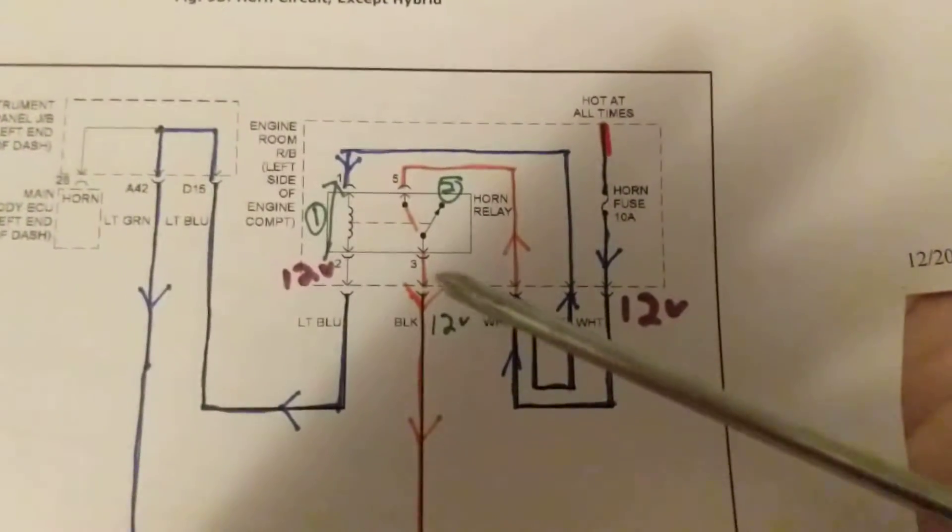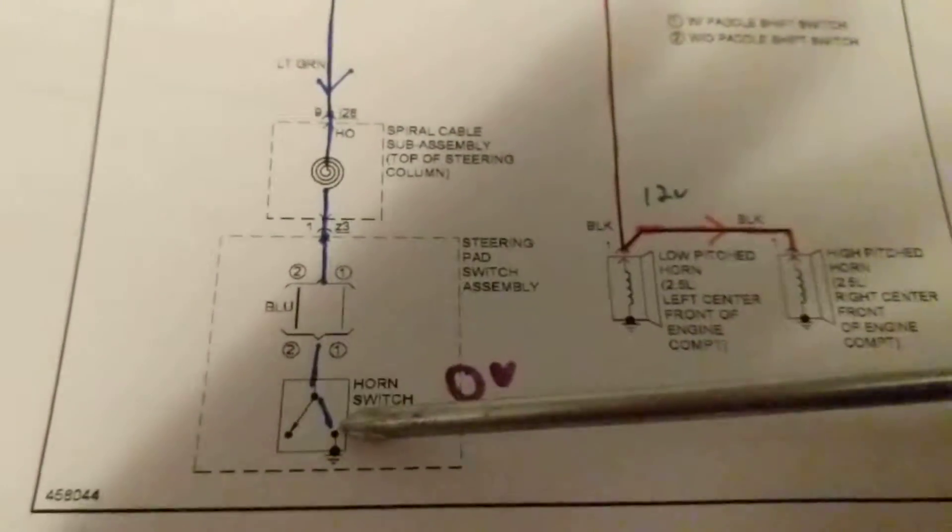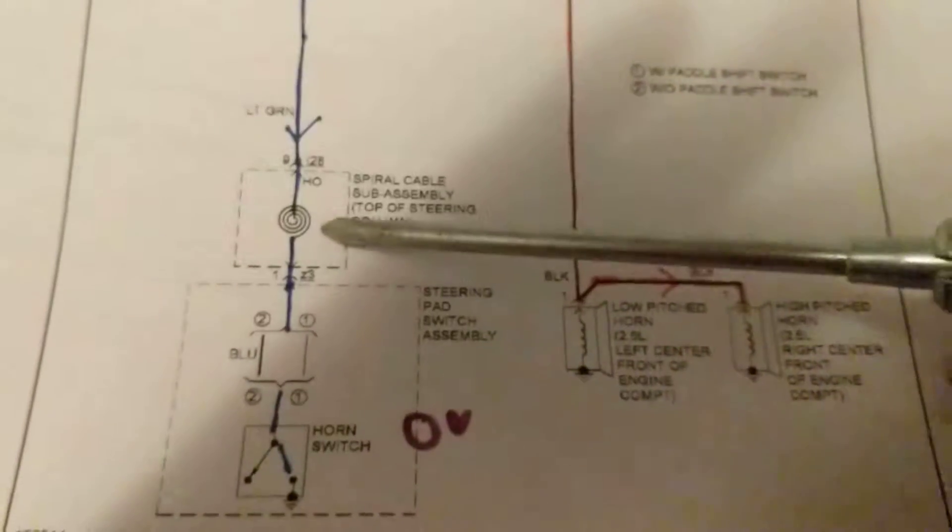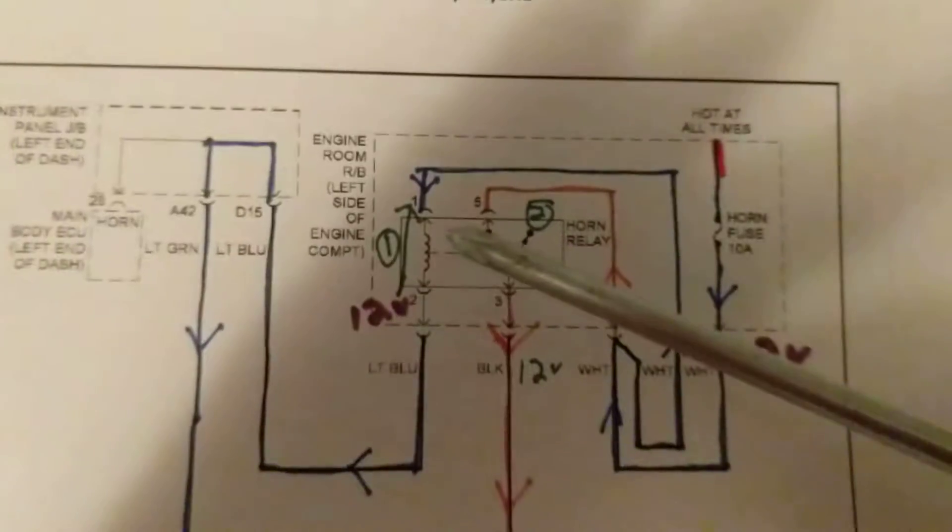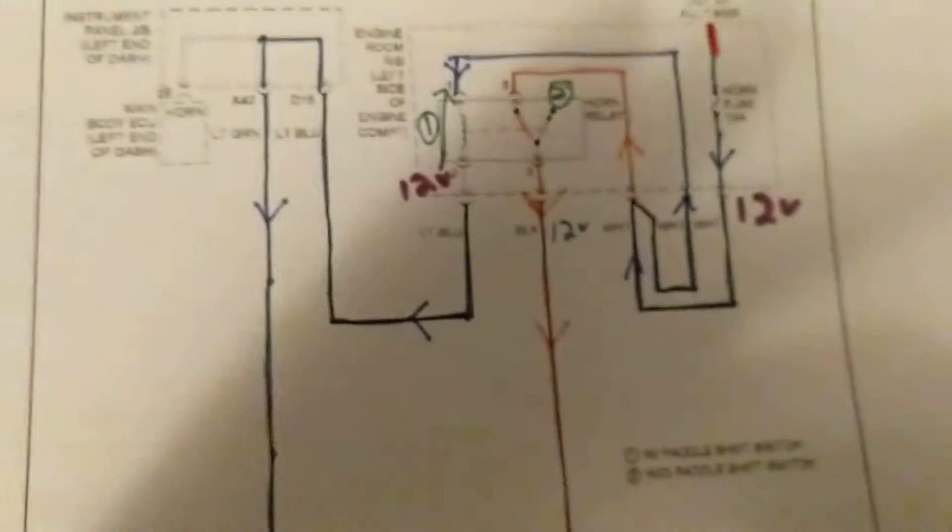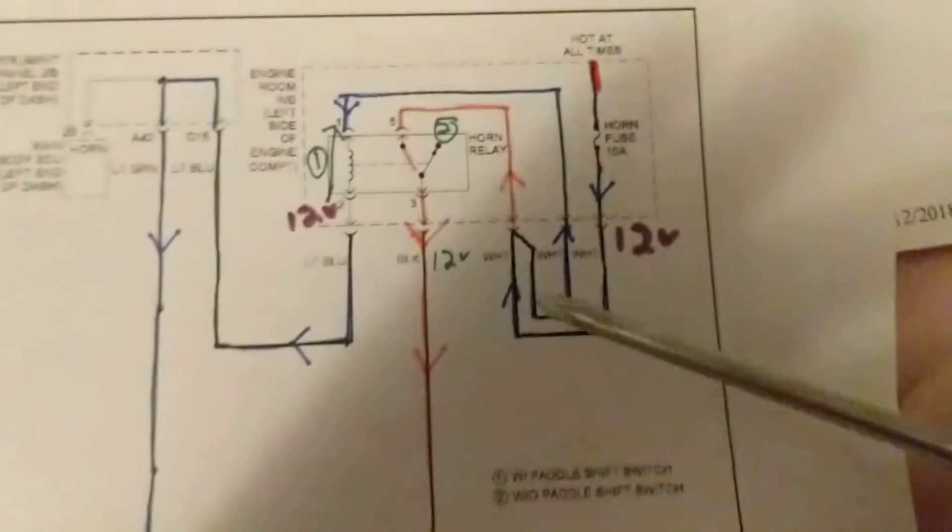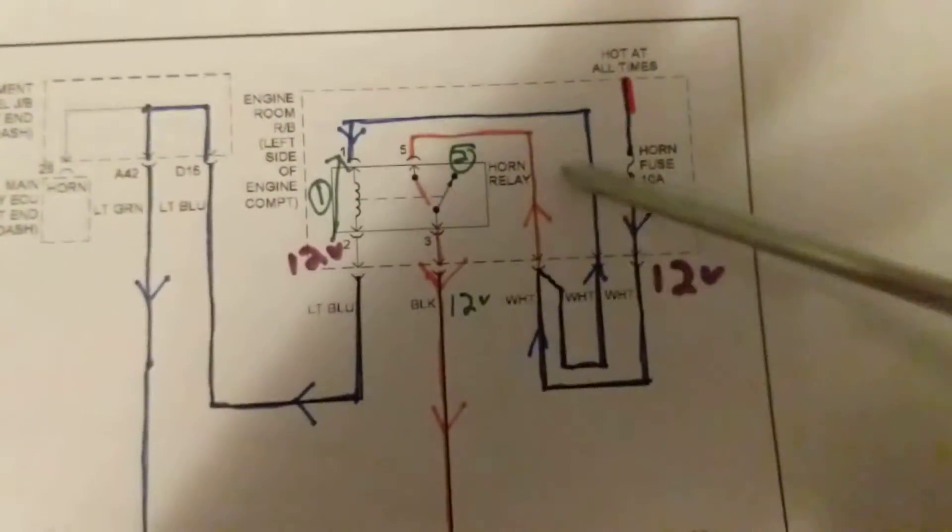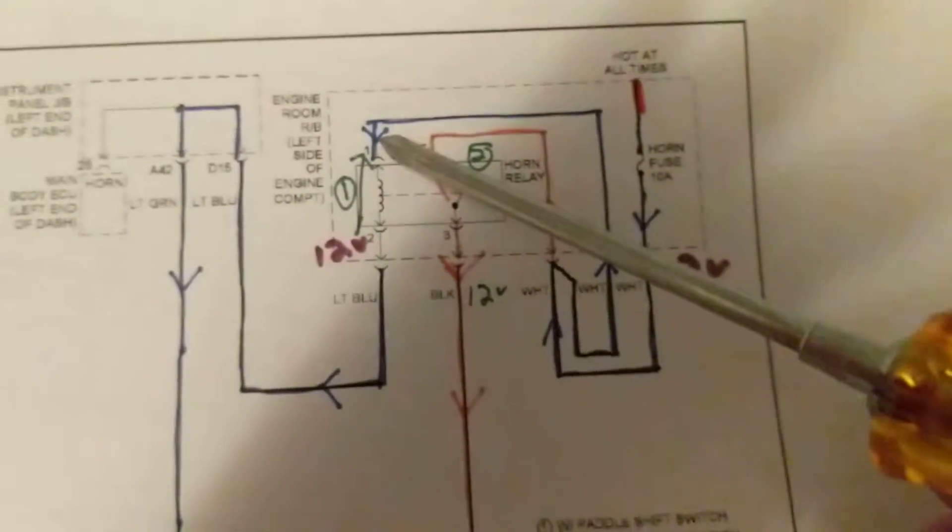So therefore we need one thing to happen. The switch has to be closed and the clock spring activated. So therefore once this happens, we have current flowing to this. Now we said we have both horns not working. What does that mean? First, let's go over here, measure 12 volts. If we measure 12 volts over here, that means the fuse is intact.